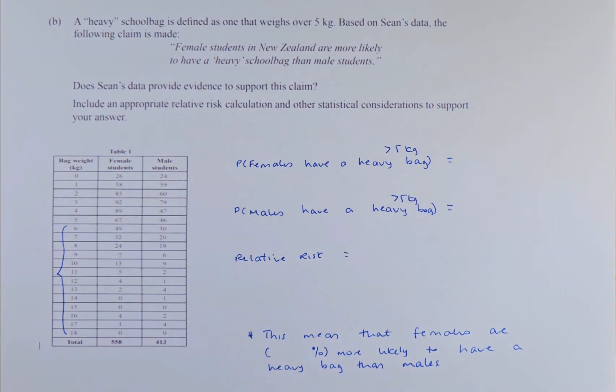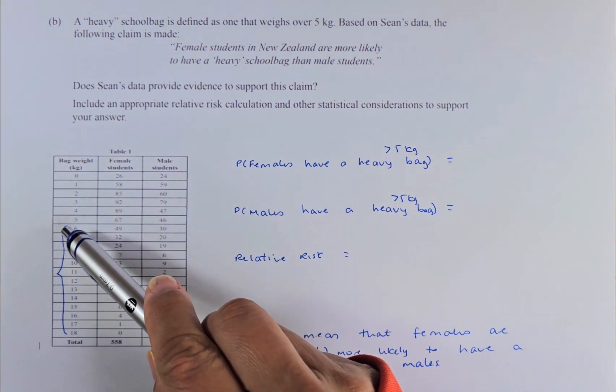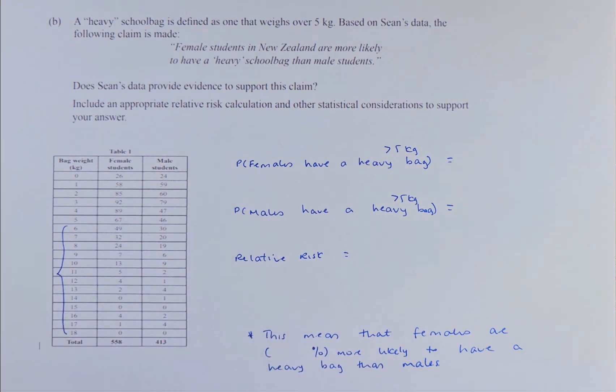The question is: A heavy school bag is defined as one that weighs over 5kg. So anything above 5kg, so 6kg, 7kg all the way to 18kg, they are considered as heavy. Based on shown data, the following claim is made: Female students in New Zealand are more likely to have a heavy school bag than male students. Does shown data provide evidence to support this claim? Include an appropriate relative risk calculation and other statistical consideration to support your answer.